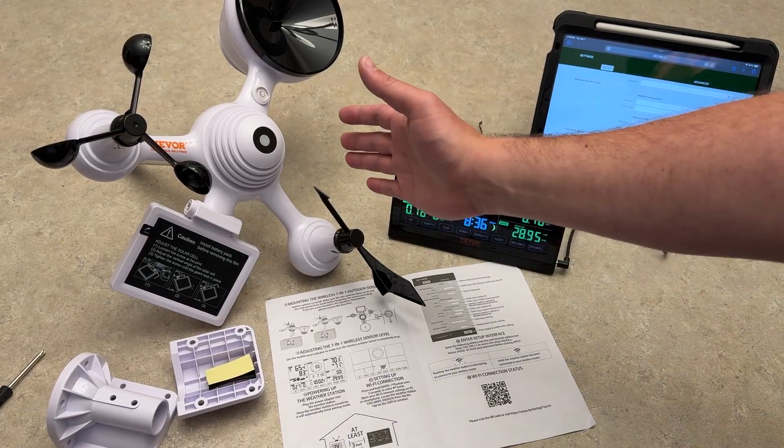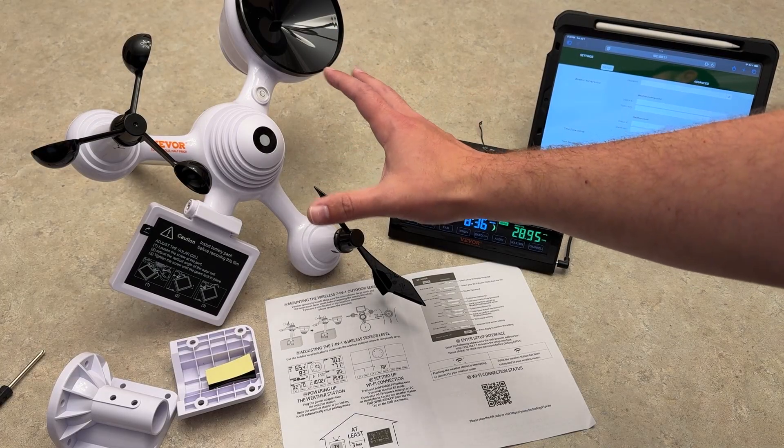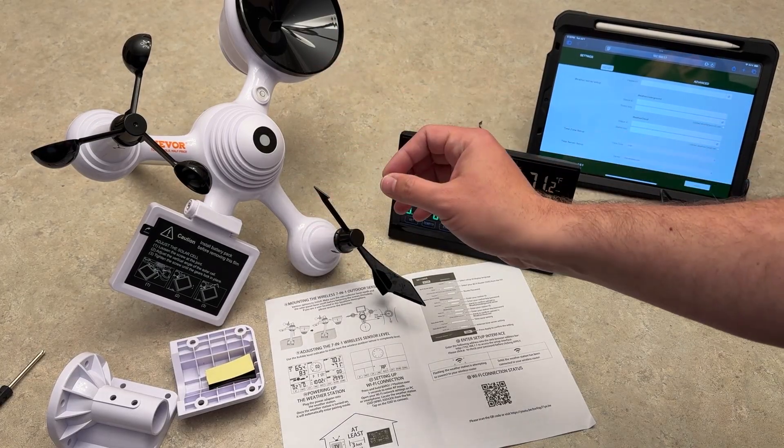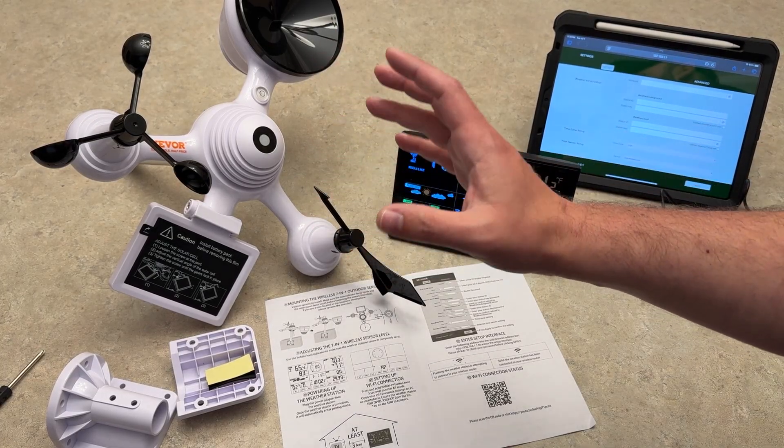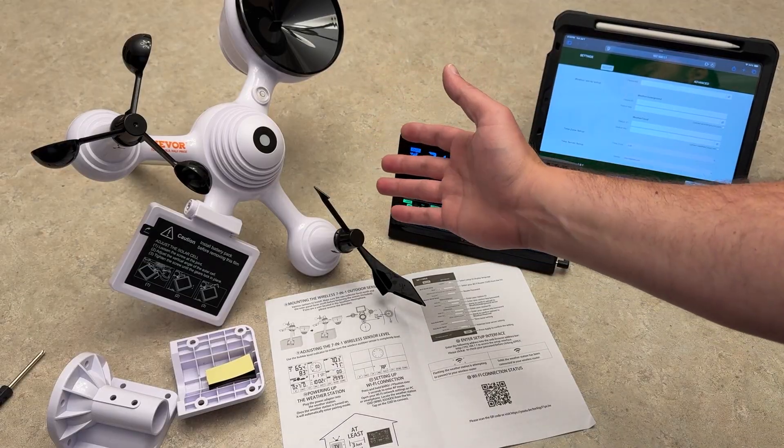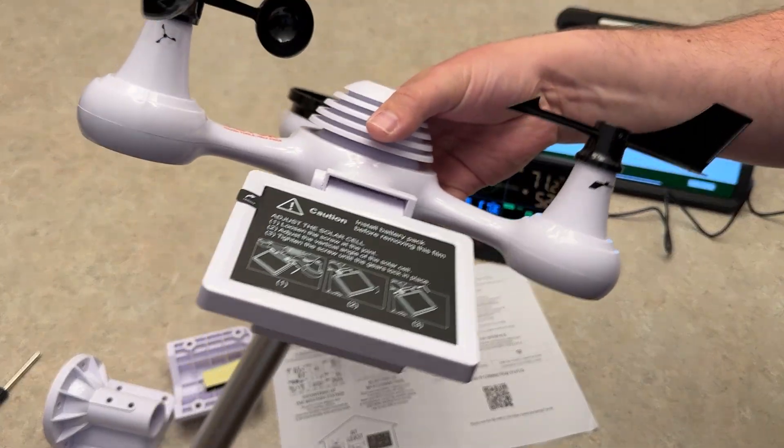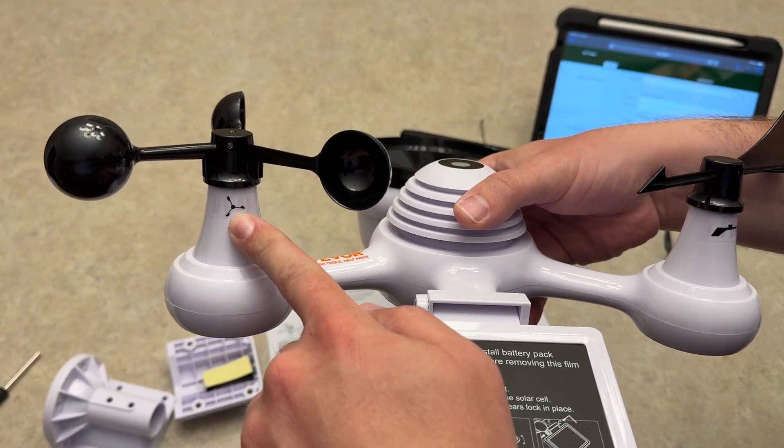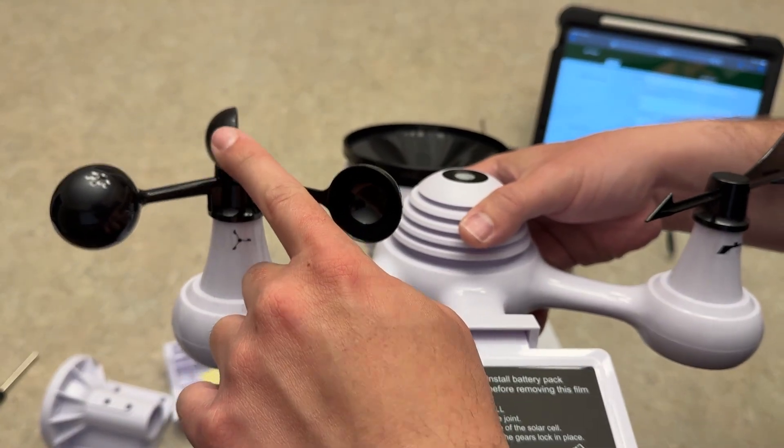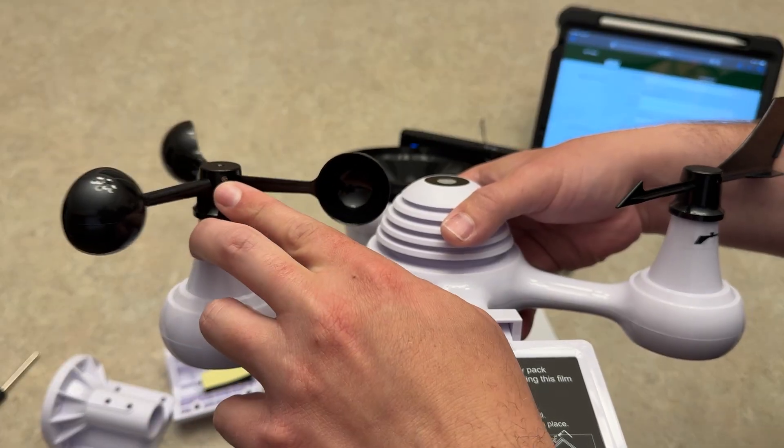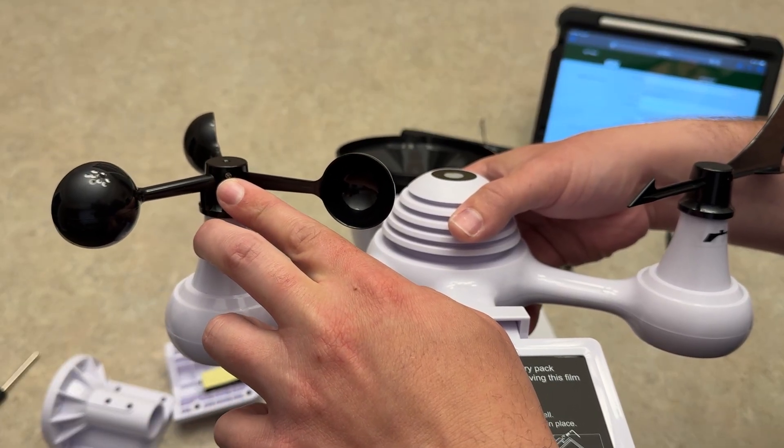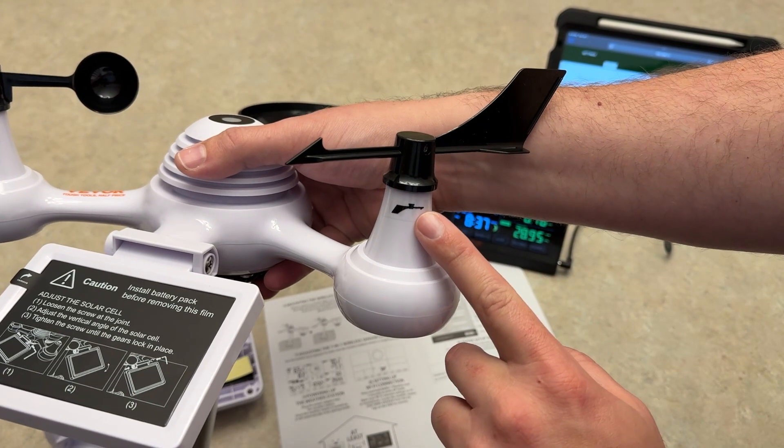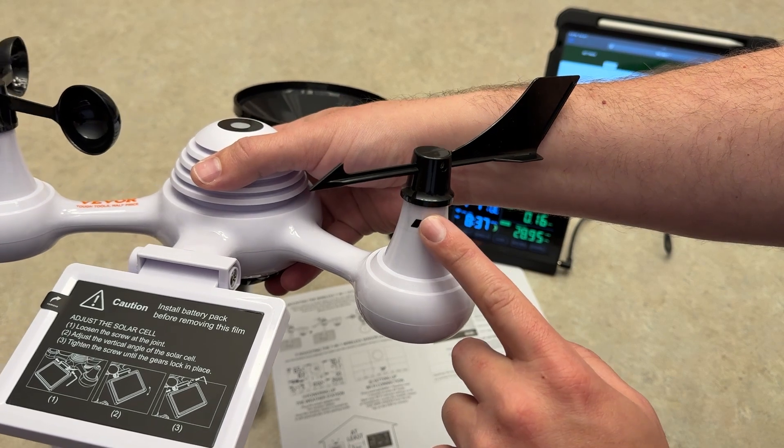All right, so as you can see we have now assembled this off camera here. It's super easy to assemble. This is probably the easiest thing I've ever assembled in my life. The reason why is they actually have everything labeled here with stickers. Right here is your wind cup indicator. You just slide that on. There's a flat part and you just screw down the screw right on the flat part of that rod. Same thing with the wind direction device here.